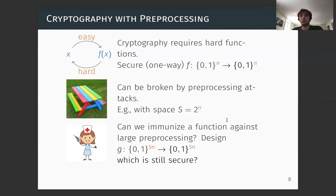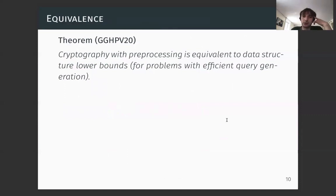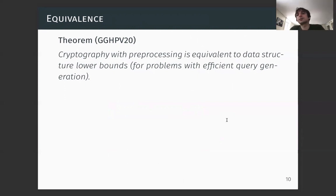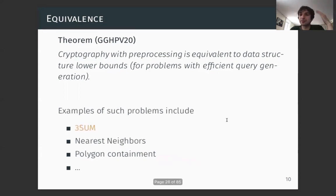We will prove that this kind of cryptography is exactly equivalent to data structure lower bounds — specifically, that data structure lower bounds are exactly equivalent to cryptography with preprocessing in the random oracle model. The main result of our work is that this kind of cryptography is equivalent to data structure lower bounds for a specific, but quite natural and large class of data structure problems.